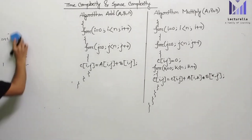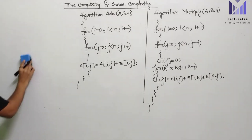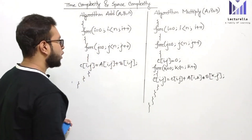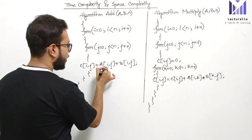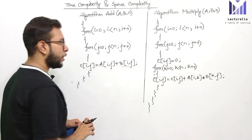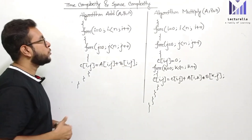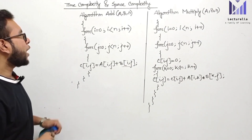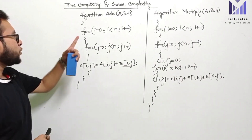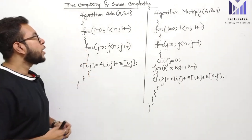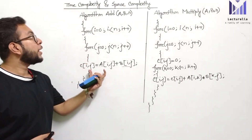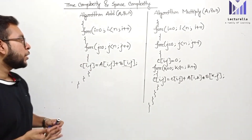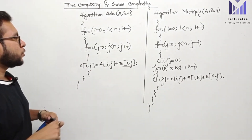Next we have the algorithm add(a, b). We can see here the for loop. Here 'a' is a two-dimensional array. The algorithm add(a, b) has a for loop, where i equals 0. Here the loop is going to change with j. So here a and b are two-dimensional arrays — this is what I want to introduce as a matrix.